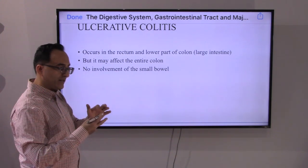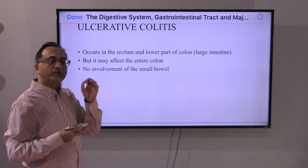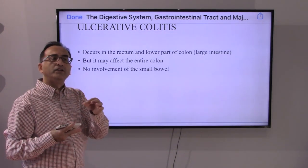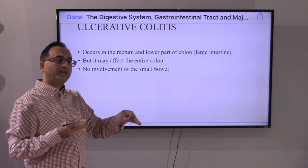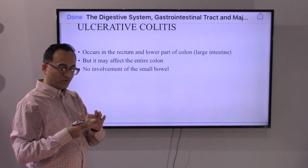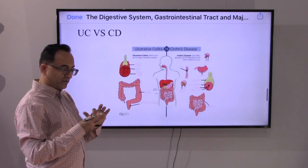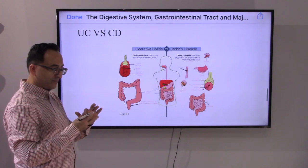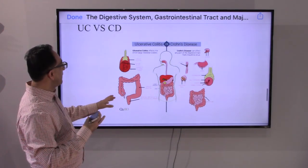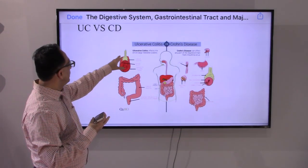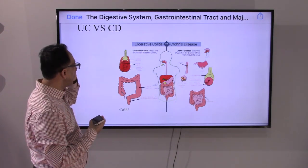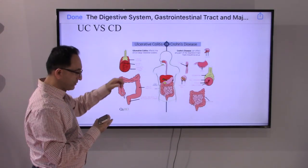As for ulcerative colitis, it starts with the rectum and lower part of the colon — the large intestine — and may affect the entire colon. If you see something wrong in the small bowel, then you are probably dealing with Crohn's disease as opposed to ulcerative colitis. These slides help illustrate the difference between ulcerative colitis and Crohn's disease.